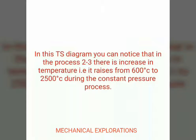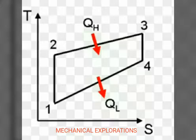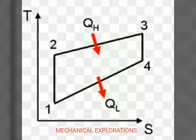Now in the same diesel cycle we are going to see the TS diagram. In this, the same process 2 to 3 shows an increase in temperature — a rise from about 600 degrees Celsius to about 2500 degrees Celsius — which is the temperature range used for combustion.